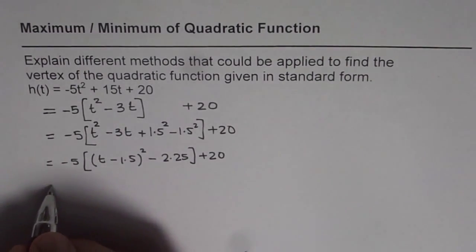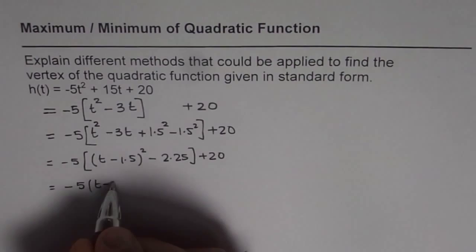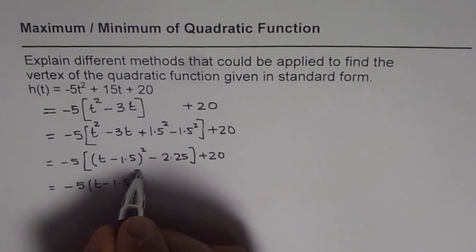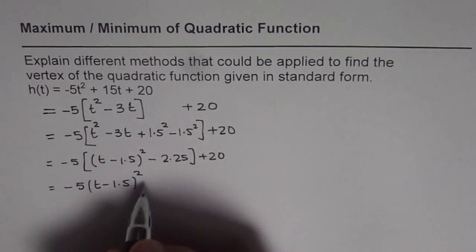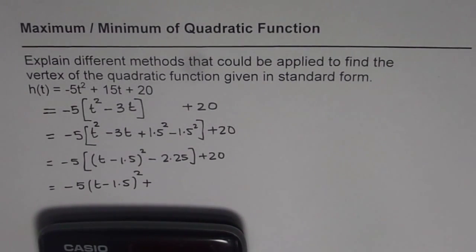Now we can open the bracket. So we have -5(t - 1.5)² and minus and minus becomes plus. And we can multiply 2.25 by 5, so we get 45/4 which is 11.25.